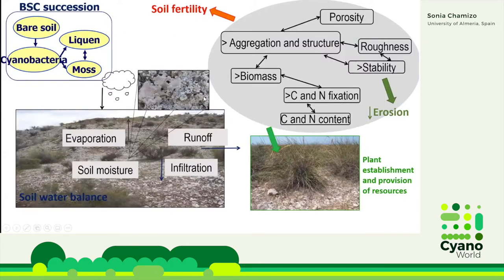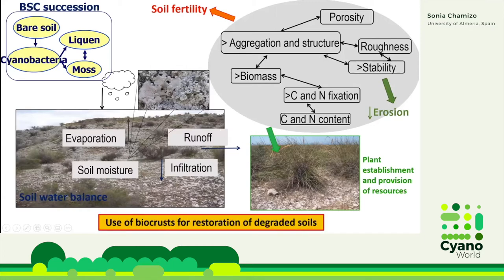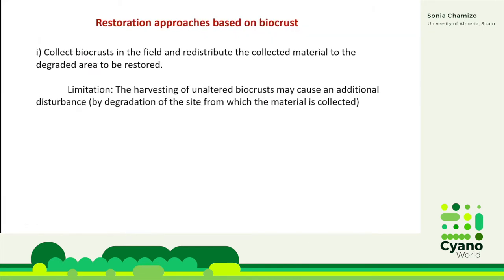Because of all these roles that they play in these environments, we propose the use of biocrusts for restoration of degraded soils. There are different approaches based on the use of biocrusts for soil restoration. One approach is to collect biocrusts in the field and redistribute the collected material to the degraded area that needs to be restored. But this has a very important limitation — the harvesting of intact biocrusts may cause an additional disturbance at that site.